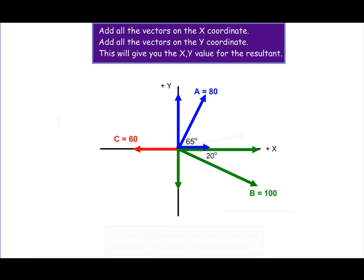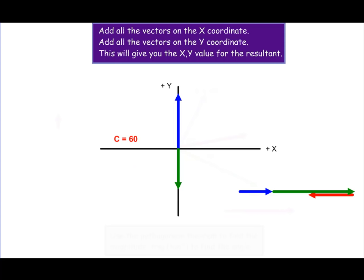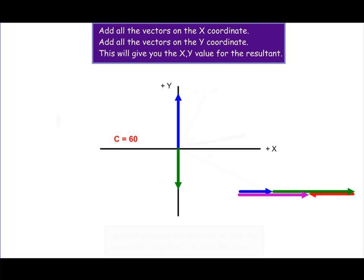To make this look a little bit easier, let me take away the original vectors A and B and just work with the components. We're going to find the sum of all the vectors in the x direction — that would be the x component of vector A and the x component of vector B, done head to tail. Then vector C lies entirely on the x-axis in a negative direction, so we have to subtract that. The sum of these three vectors is indicated by the purple arrow.